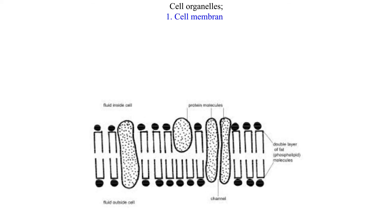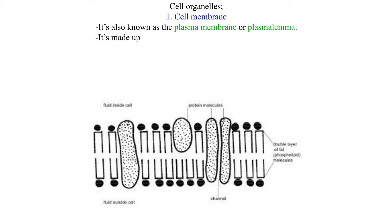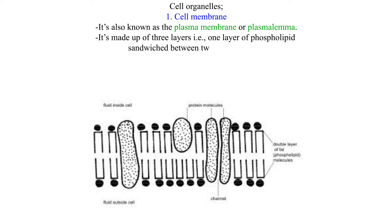Cell membrane. It's also known as the plasma membrane or plasmalemma. It's made up of three layers — one layer of phospholipid sandwiched between two protein layers. Functions of the cell membrane.